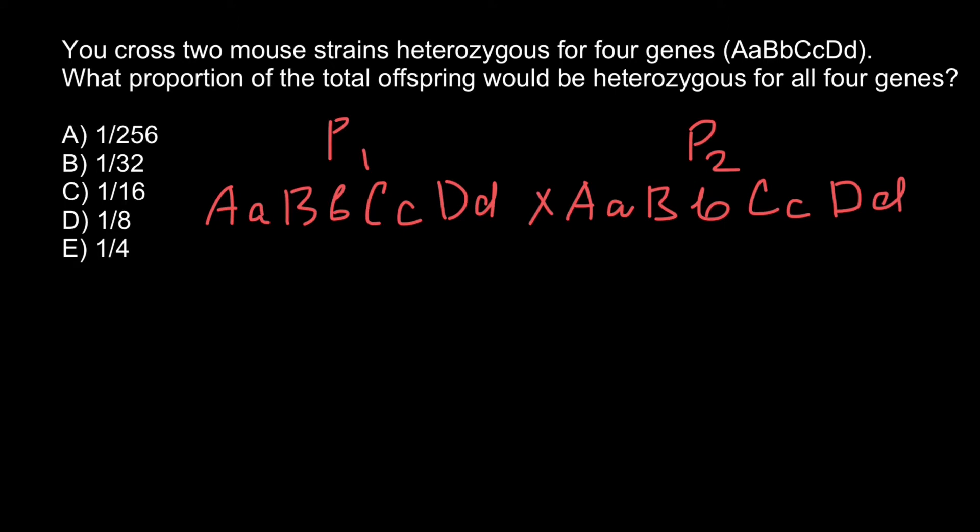To solve this problem, we assume that all four genes are independently assorted and not linked, meaning not on the same chromosome.